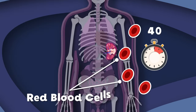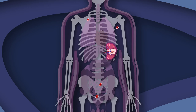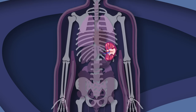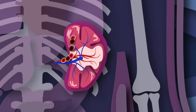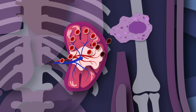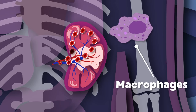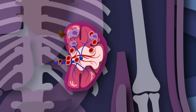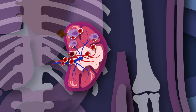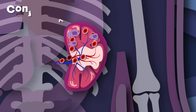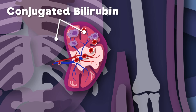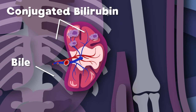Red blood cells last 120 days, delivering oxygen to your body. When they're damaged entering the spleen, recycled is what they'll be. Healthy cells flow through, but those that are in their unhealthy stages are broken down by large white blood cells called macrophages. These old red blood cells are turned into conjugated bilirubin, which is excreted through bile out of your body.